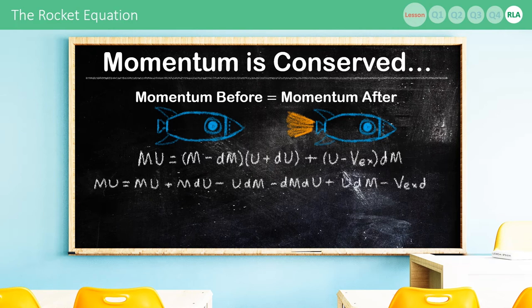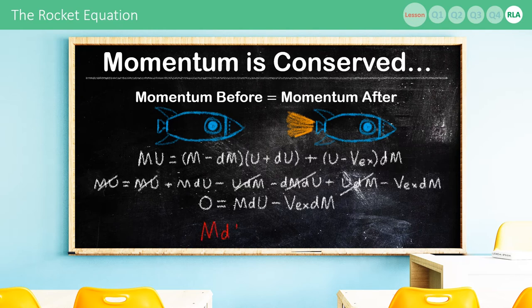We then cancel out like terms and the dm du we can cancel too, because by definition it's infinitesimally small. And after rearranging, we're left with the differential equation m du equals vex dm.